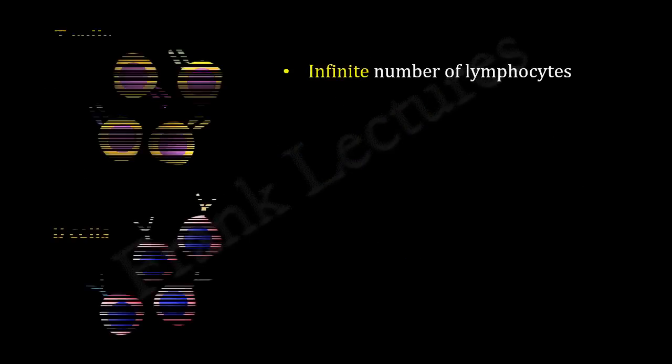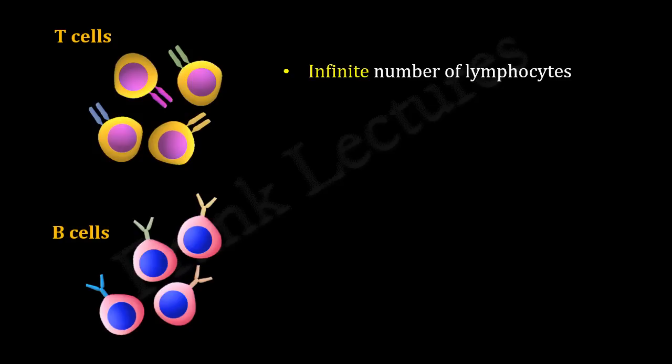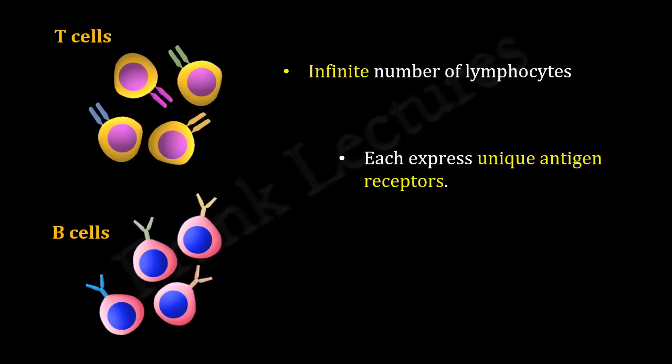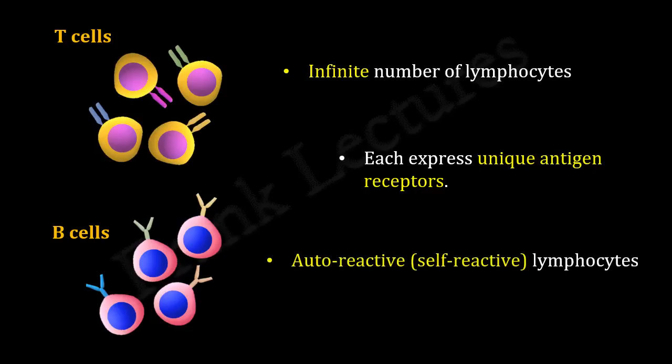We also studied that our immune system produces nearly infinite number of lymphocytes and each of these express unique antigen receptors on their cell membrane. Our immune system also generates lymphocytes capable of recognizing self-antigens. Such lymphocytes are known as auto-reactive or self-reactive lymphocytes.